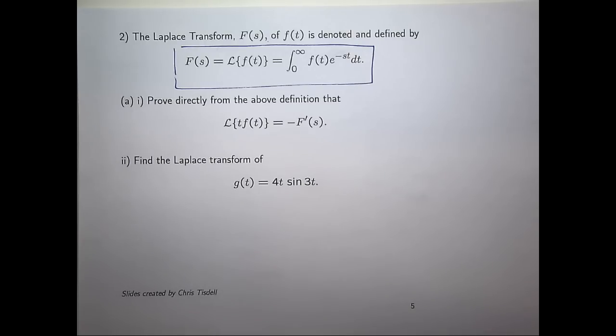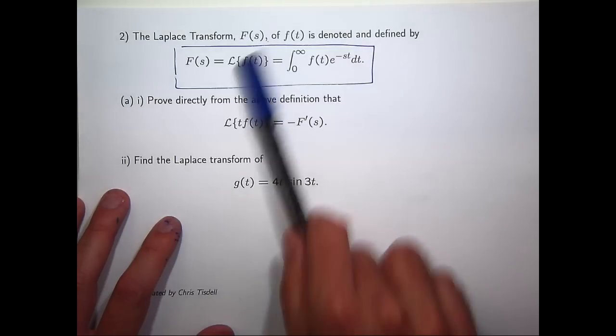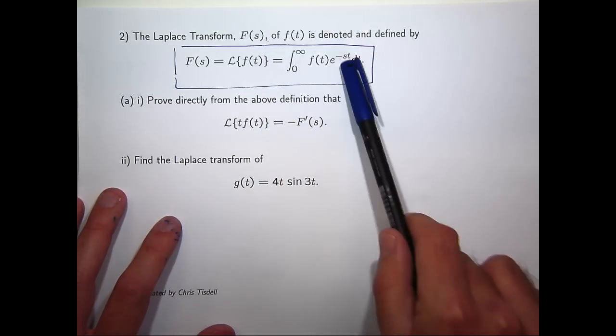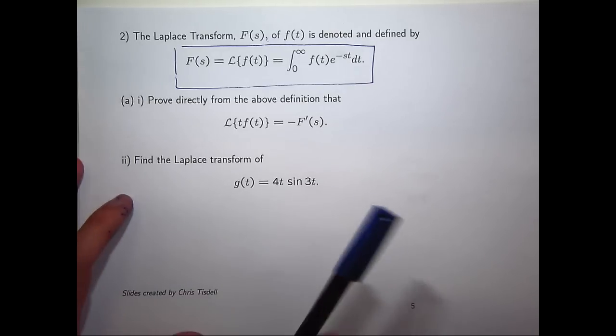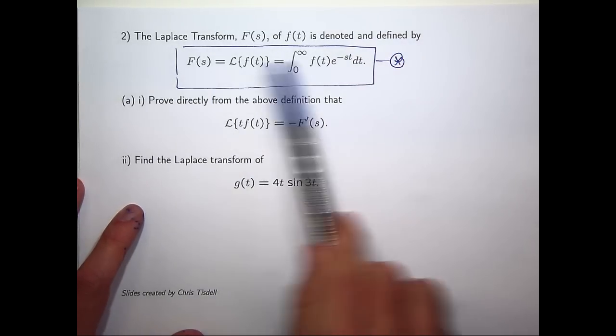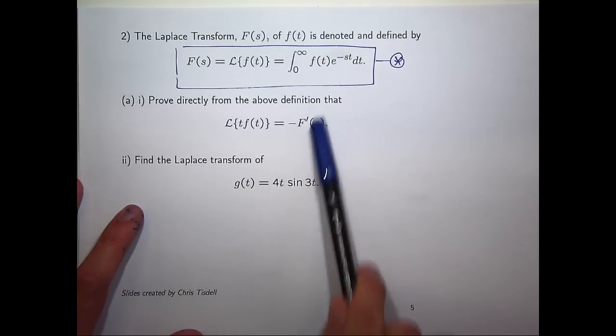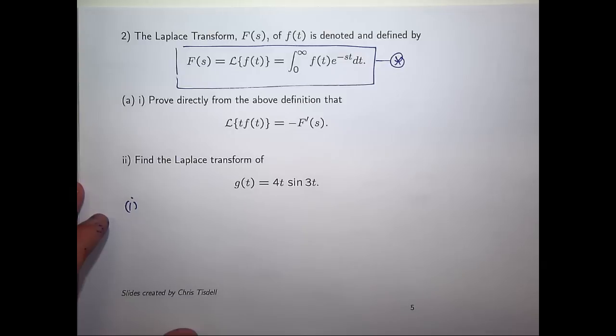So prove directly from the definition that if this is the Laplace transform of little f of t, the Laplace transform of t times little f of t is just negative big F prime of s. So for this one, what we're going to do is start with the definition and differentiate to form the right-hand side of the thing we want.